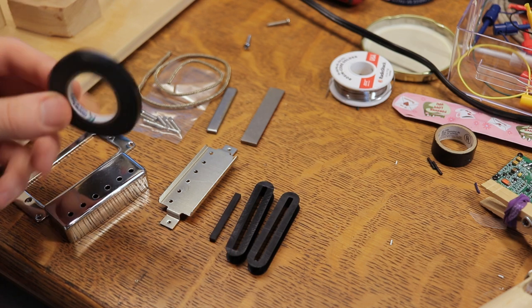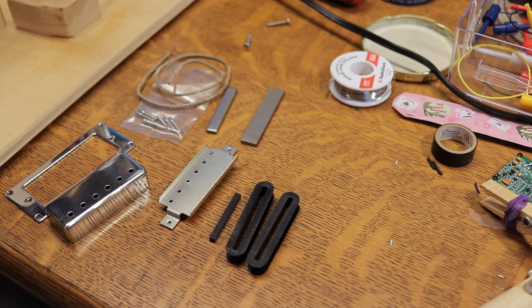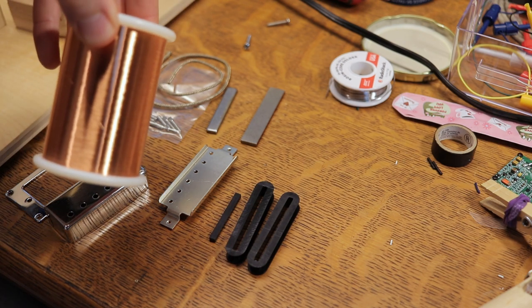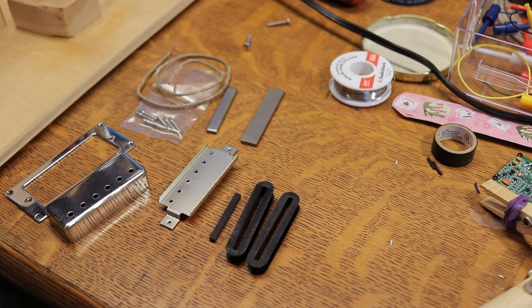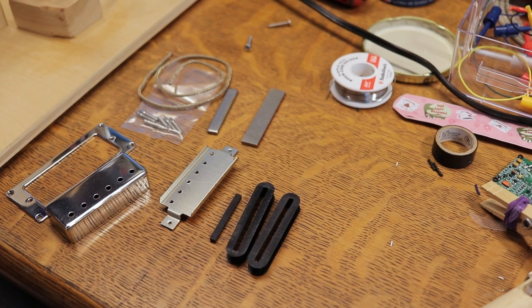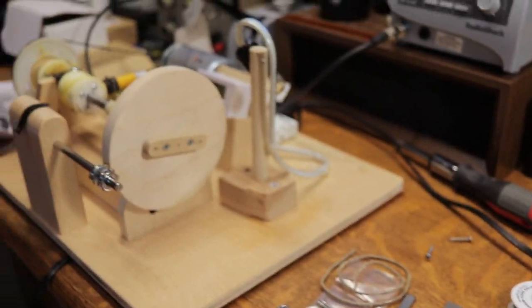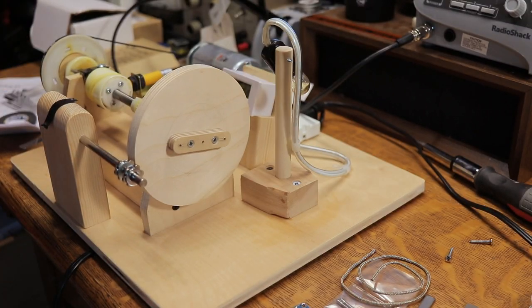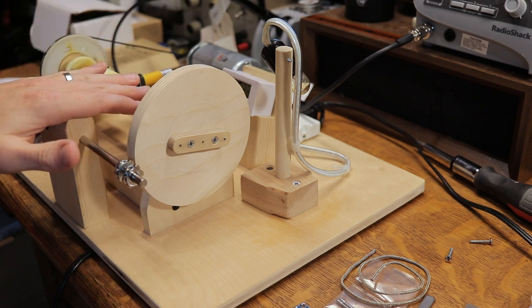Besides that, you're going to need probably some of this paper tape for taping up the pickup, some of this 42 gauge spool of wire to actually wind the pickup with, and then obviously the tools to put it all together. So a soldering iron and the biggest piece of the puzzle, which is a pickup winder.